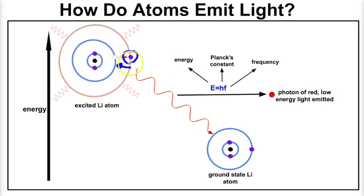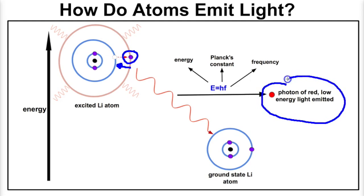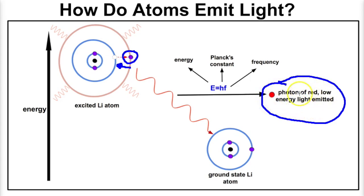As the excited lithium atom goes back to a ground state, this electron moves back down to a lower energy level and releases a photon of red light. Photons are a form of electromagnetic energy. This photon has a certain amount of energy, and as we learned earlier, we can calculate that using Planck's constant multiplied by the frequency. This red photon has low energy associated with it.